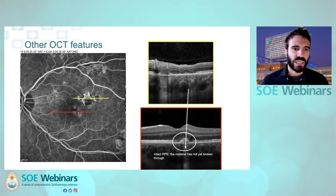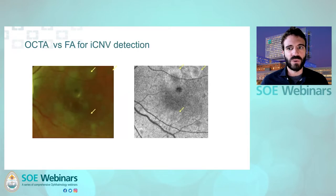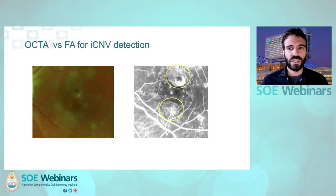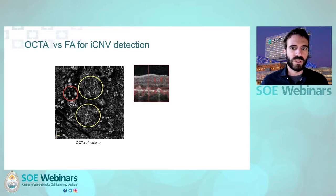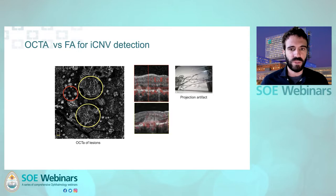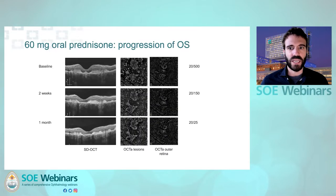Why is ICG least useful in multifocal choroiditis? Because it's difficult to distinguish between inflammatory material and inflammatory choroidal neovascularization. On FA in yellow circles, these are probably inflammatory CNV, but it's difficult to distinguish from the staining of inflammatory material. OCTA can help, but only if we layer it correctly. There is a lot of ongoing flow, but these particular conical lesions have no flow inside — those are projection artifacts from inflammatory material. The real inflammatory choroidal neovascularization is inside the yellow circle where you can see the flow. You can see how it improves with treatment, the inflammatory material goes away completely, and the iCNV decreases.